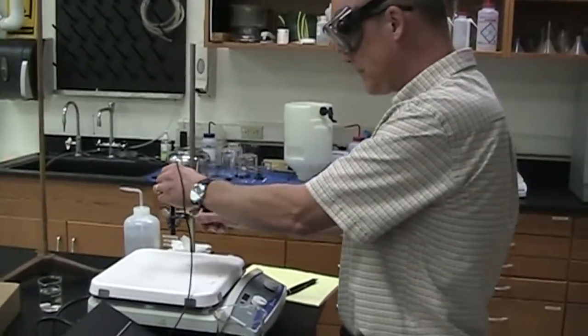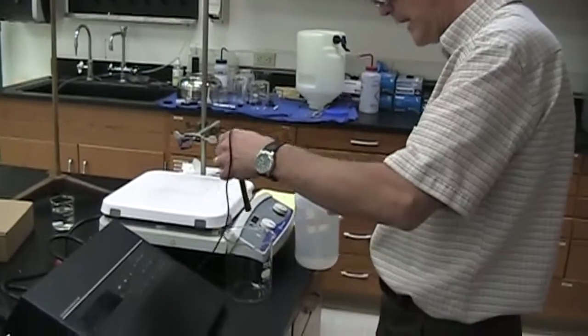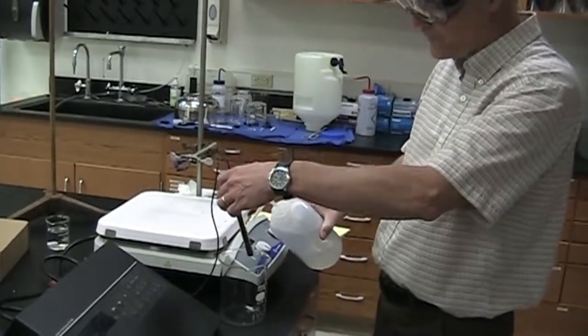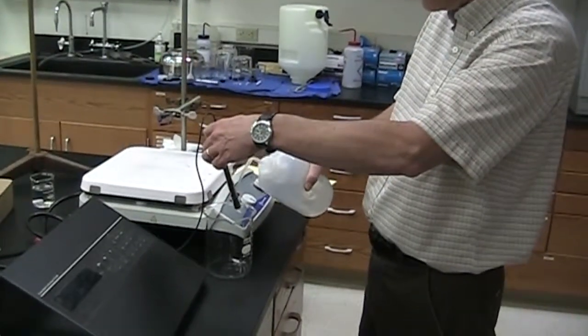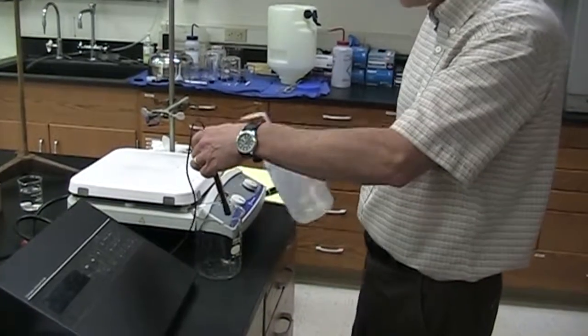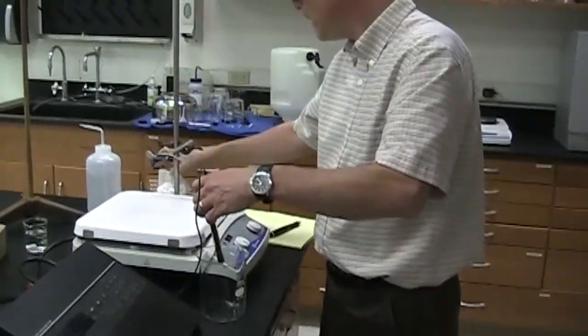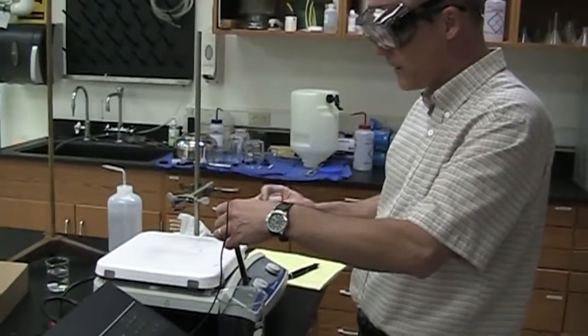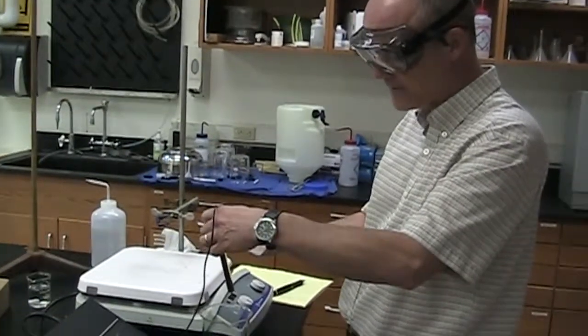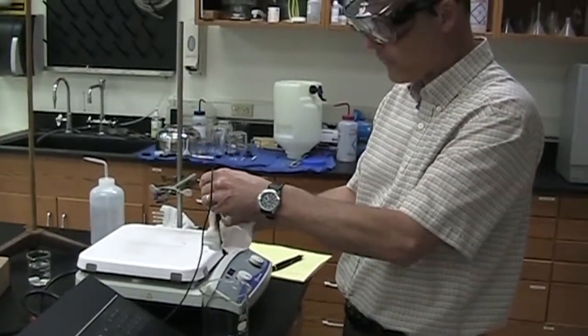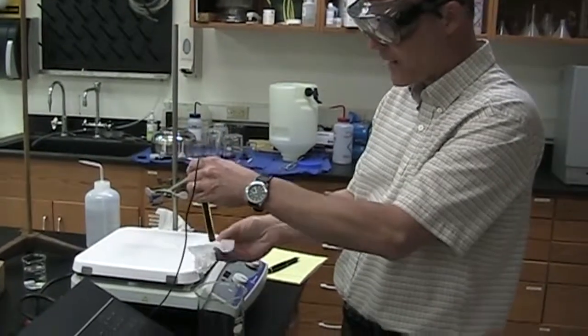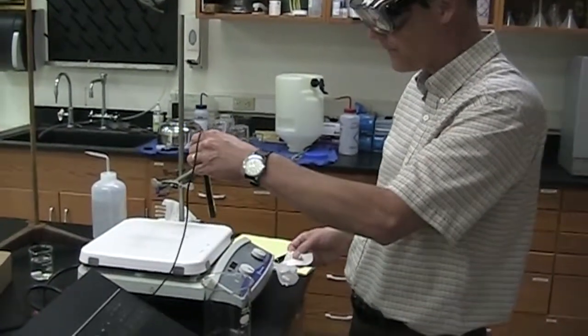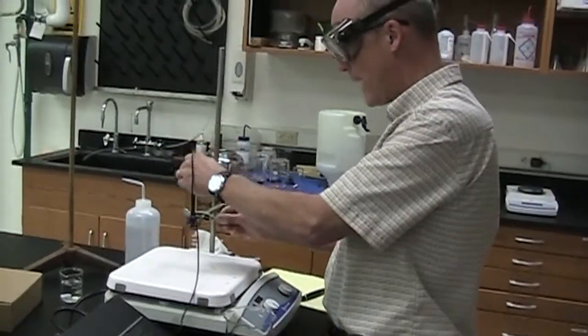We will then rinse the electrode if you're near a sink, over a beaker, however you choose to, with distilled water. We simply squirt some on there. And then we don't rub the electrode at the sensing element, which is the bottom. We can kind of wipe the water off. And then for the bottom, we just dab it lightly. Goes back in the holder.